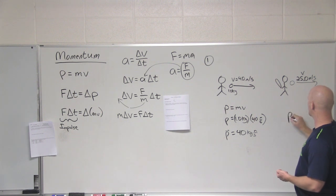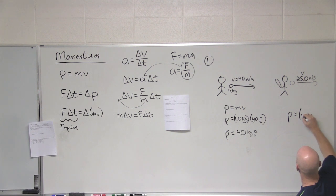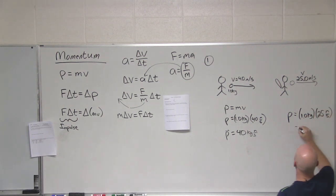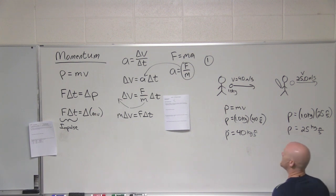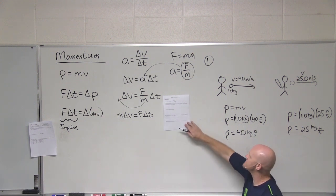But after it contacts the bat, what's its momentum at that point? Yeah, and in this case, 1.0 kilograms times 25 meters per second, it's going to get its momentum of 25 kilogram meters per second.